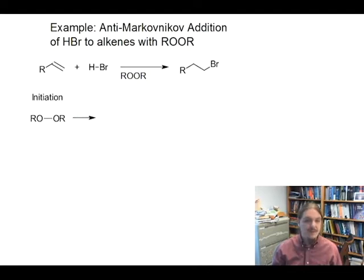The first initiation step is homolytic cleavage. We need some kind of step to generate new radicals where there weren't radicals before. So our peroxide undergoes homolytic cleavage to form two peroxy radicals. For other kinds of reactions where these peroxy radicals might get involved in the structure of the product, this would be the end of the initiation. But you'll notice the structure of the product doesn't involve any alkoxy groups.